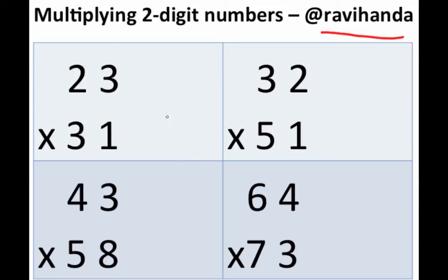So here is the trick. If you have to multiply two two-digit numbers, you can do it simply by first multiplying the last digit. So 3 into 1 gives me 3, and then you do a cross like this.